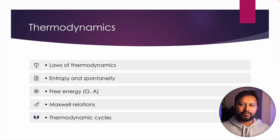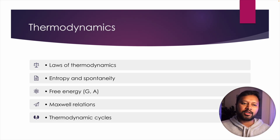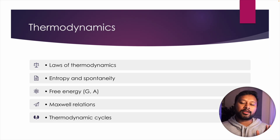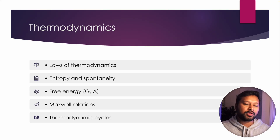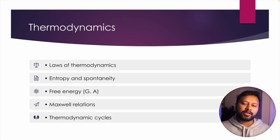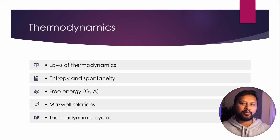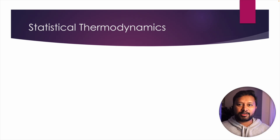Next are thermodynamic cycles — different cycles like the Carnot cycle — and thermodynamic refrigerators: how they work, how total work is calculated, and how efficiency is calculated. One important thing I almost forgot: the application of thermodynamics includes phase diagrams and the phase rule — a lot of questions are asked on this. Especially cover single-component phase systems: water, carbon dioxide, and sulfur — these three are the minimum important single-phase systems to cover.